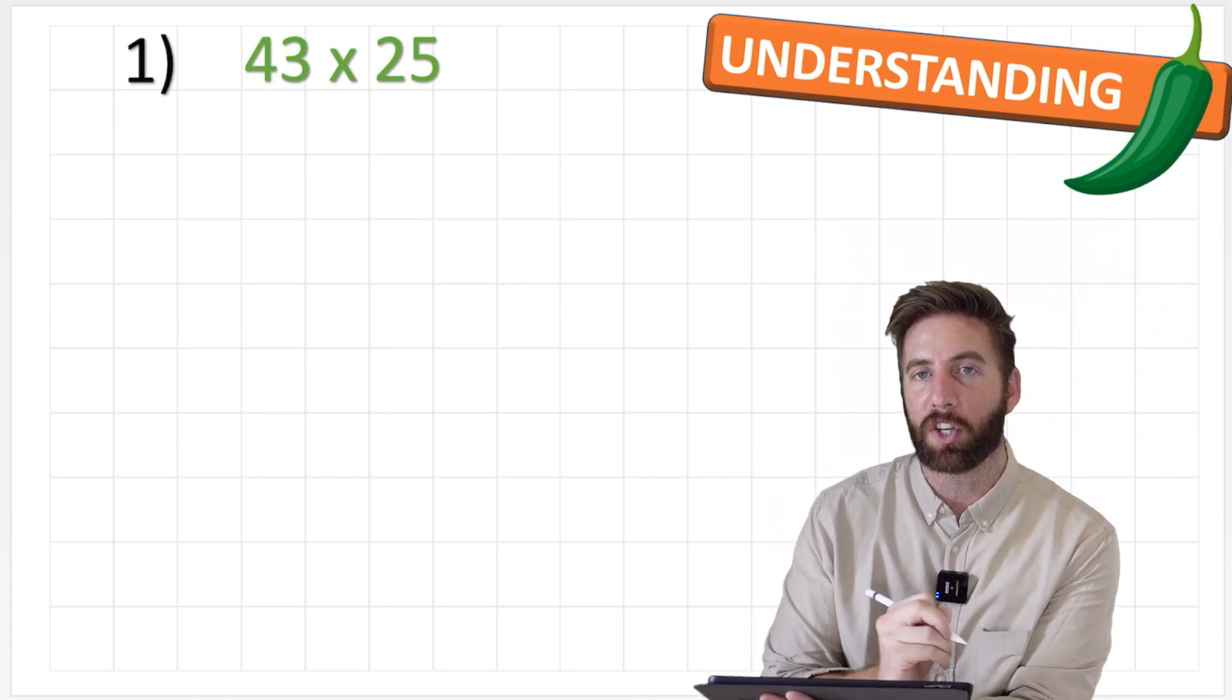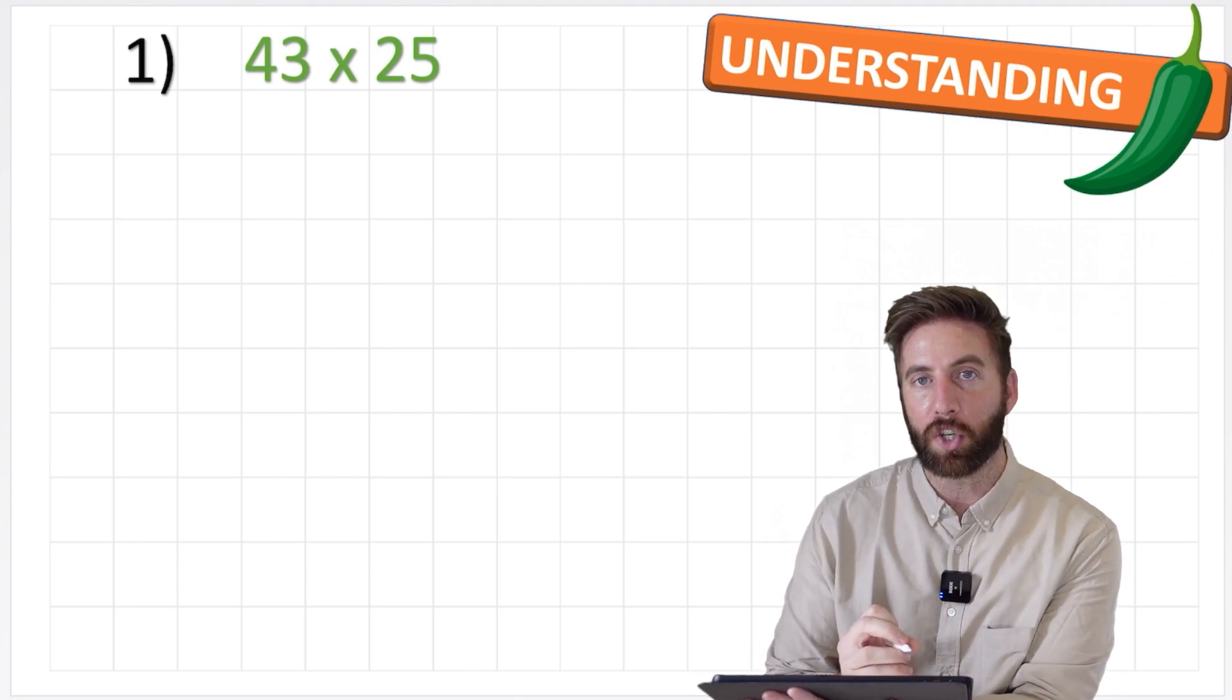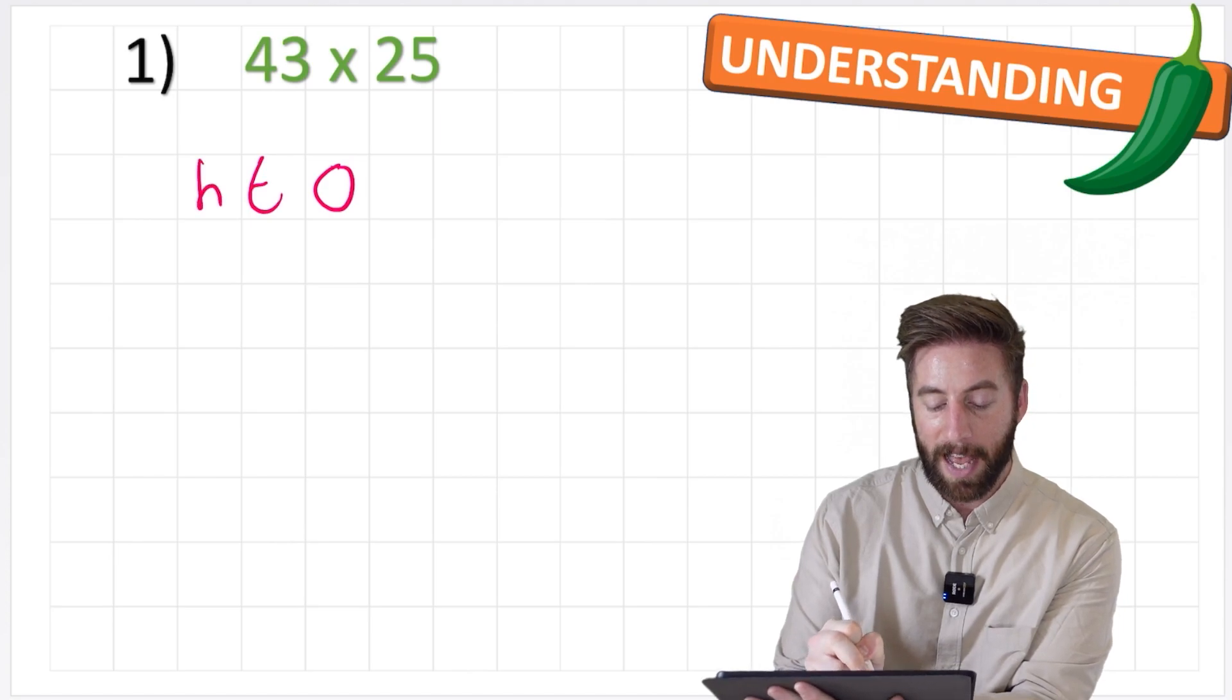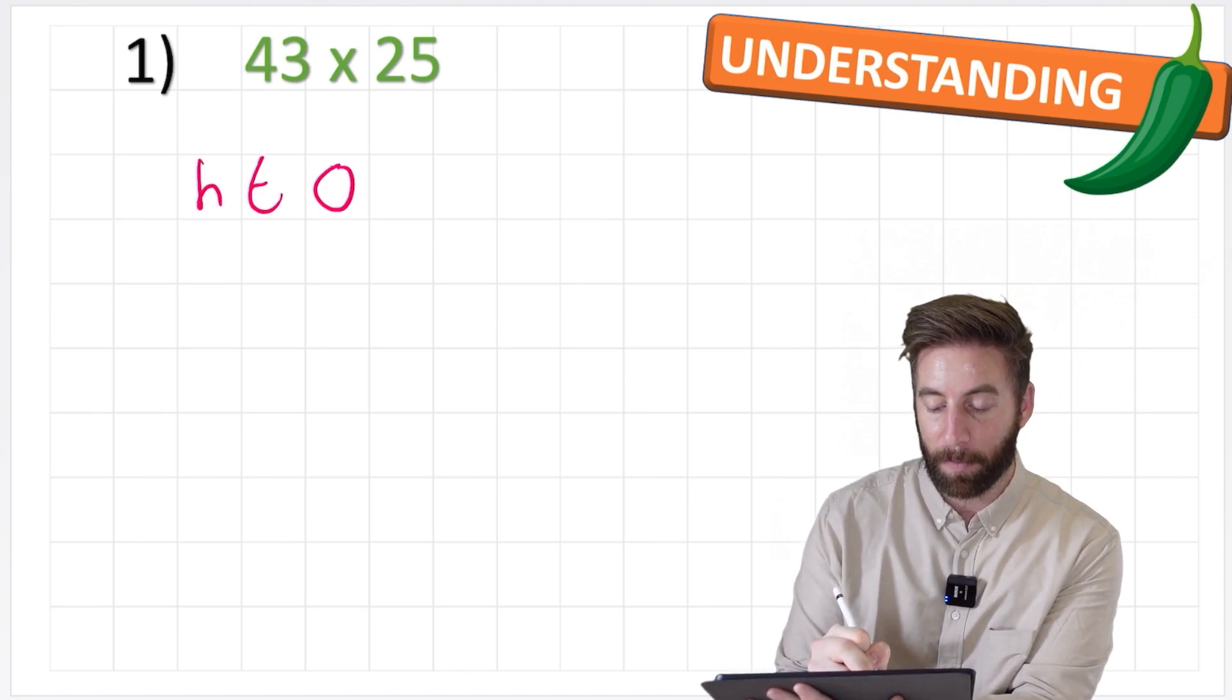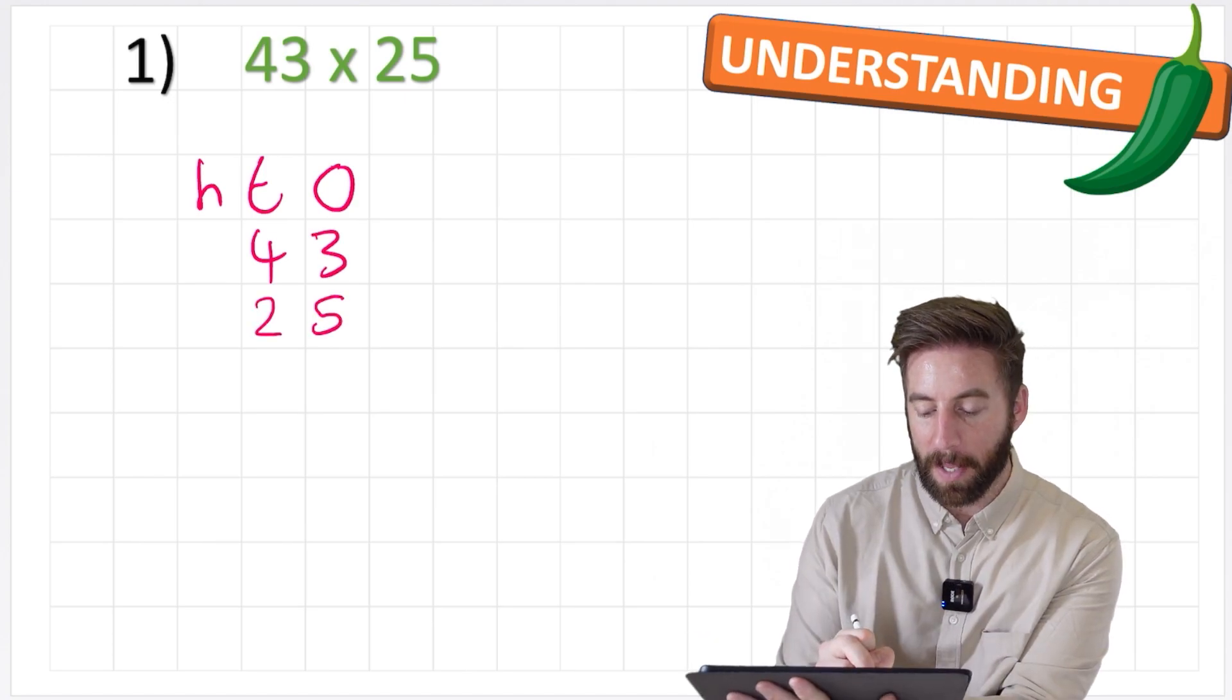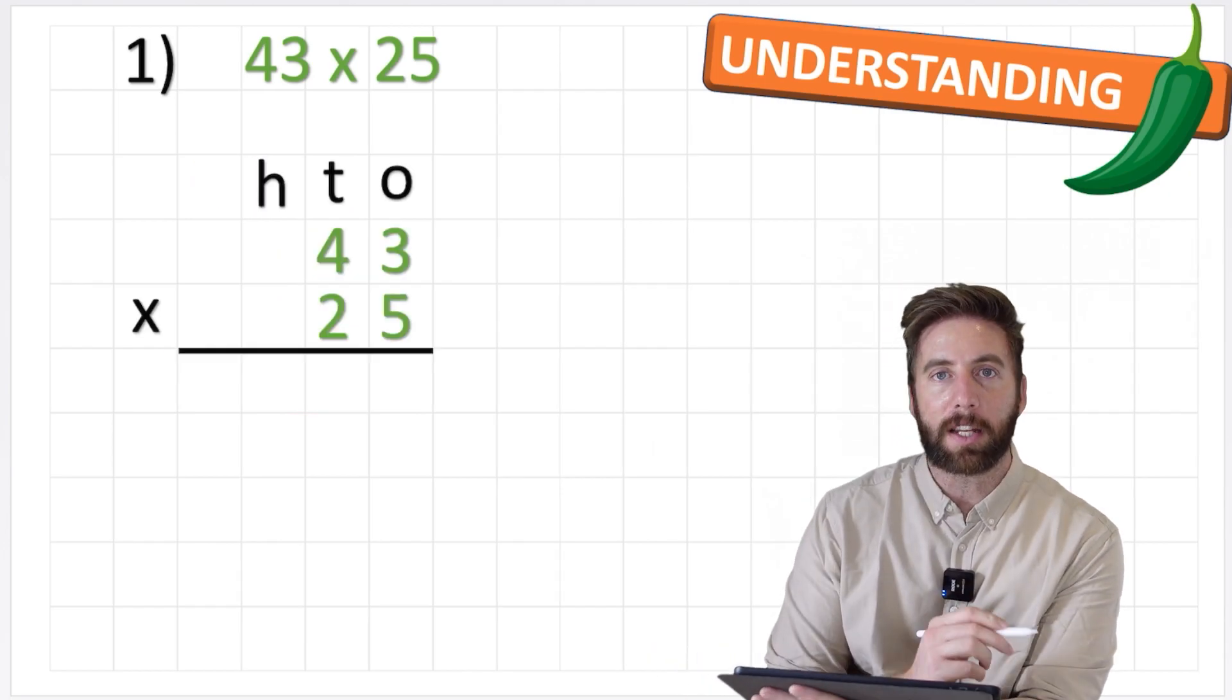Now the first thing we want to think about doing is making sure we're organizing our work nice and neatly before we begin. So I'm going to make sure I start by putting my ones, tens, hundreds and then I can enter the numbers in the correct places. 43 times 25. Put my equals line and I'm ready to begin. So let's begin.